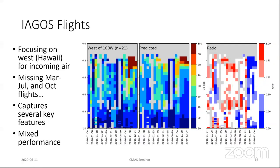If we move over to Hawaii — so if Japan was representing the outflow from Asia, now we're looking at Hawaii, which represents air having transported further along. The first panel is the observations, the second is the predictions, the third is the ratio. We're looking at individual takeoffs from Hawaii as a function of the day of the year.